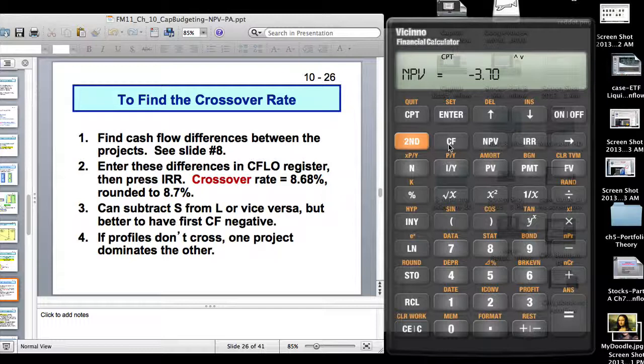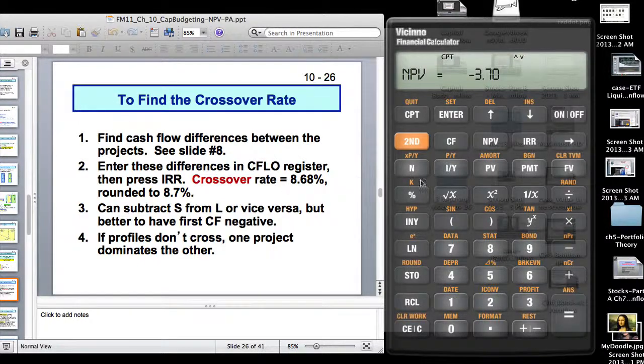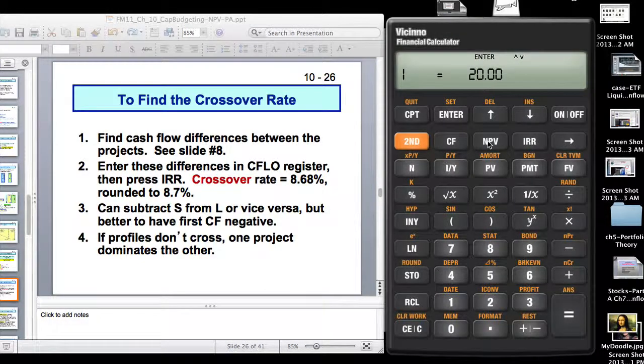Enter those differences in your cash flow register. For CF0, enter 0 because the initial investment, let's say, is 100, minus 100, minus 100, minus minus 100. So minus 100 minus minus 100 becomes 0. And then do C1, C2, C3 and then because you want to find a rate, you don't hit the NPV button because that will ask you for a rate. Just hit the IRR and you will get 8.7.